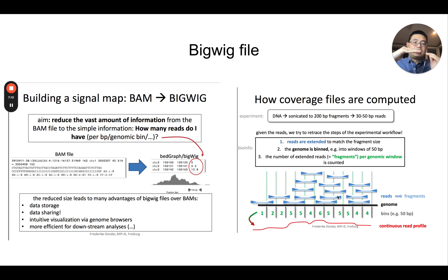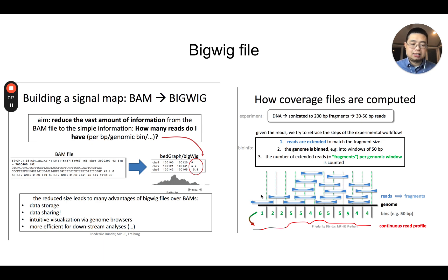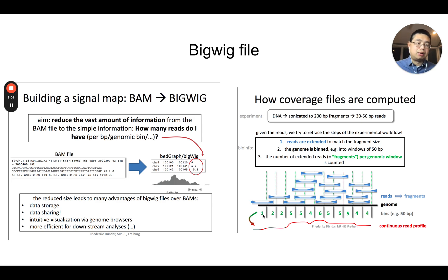In order to make the pileup bigwig file, you first extend the read to the fragment length. Then in the second step, you bin the genome into small bins — for example, 50 base pairs per bin, depending on the resolution you want. Each interval is 50 base pairs, and the fragment is extended to 200 base pairs. For each bin, you just count how many fragments fall into that bin. So you might have one fragment here, two here, five here. After you get those numbers — essentially just a histogram — if you plot them as a histogram, that is the signal intensity or bigwig file.